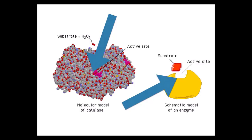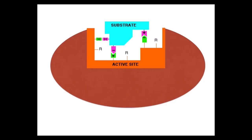The substrate molecule is held in the active site by bonds. The substrate (shown in blue) binds to the enzyme's active site (shown in orange), which is made up of a few amino acids forming a small depression. The substrate binds to the R groups of the enzyme, forming a temporary bond with those R groups. This structure of substrate bound to enzyme is known as an enzyme-substrate complex.